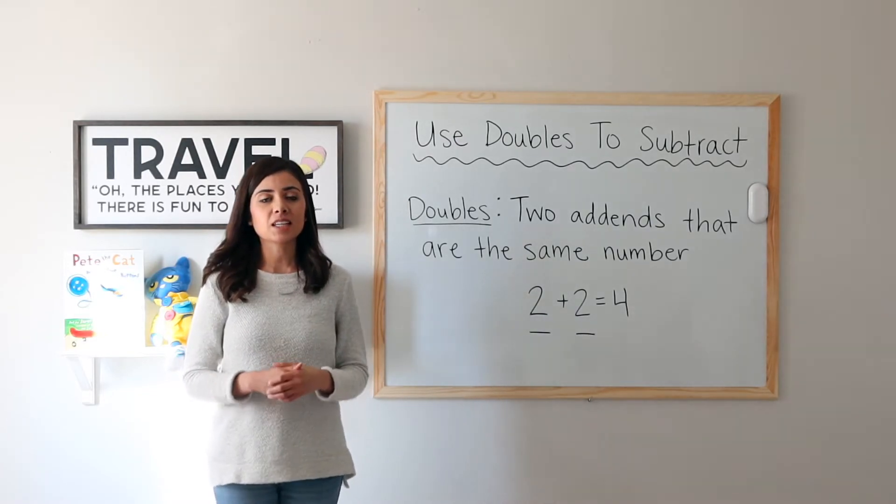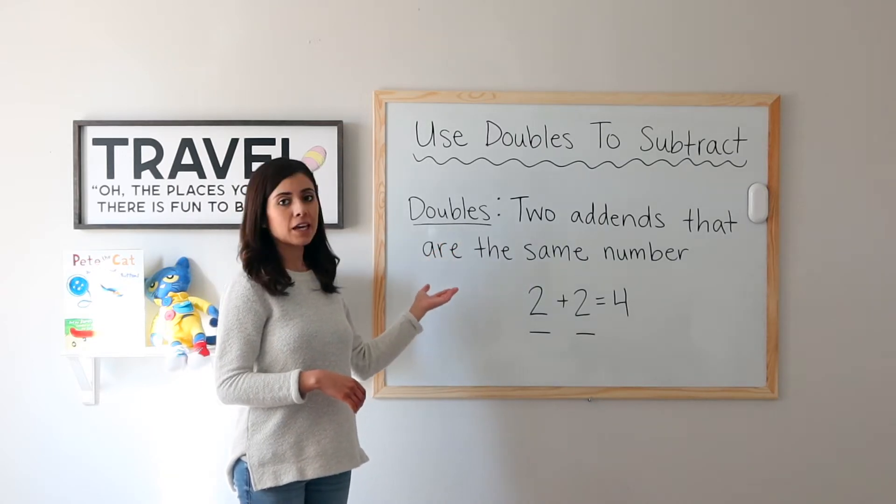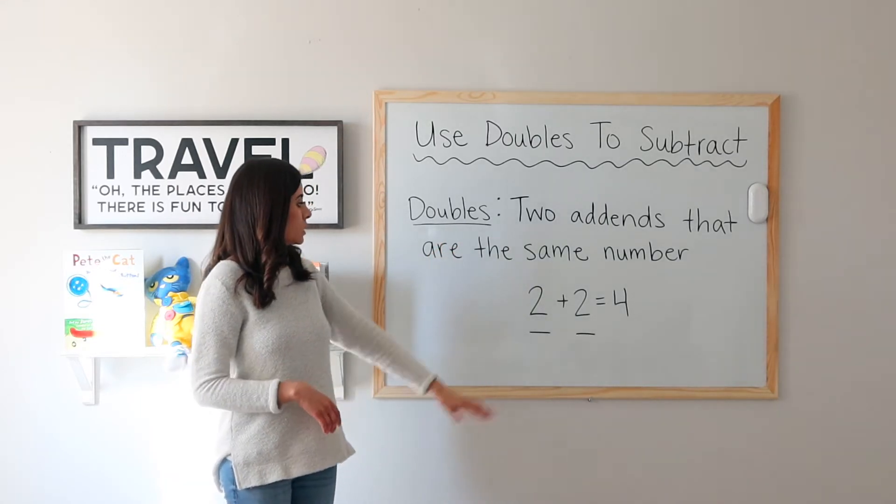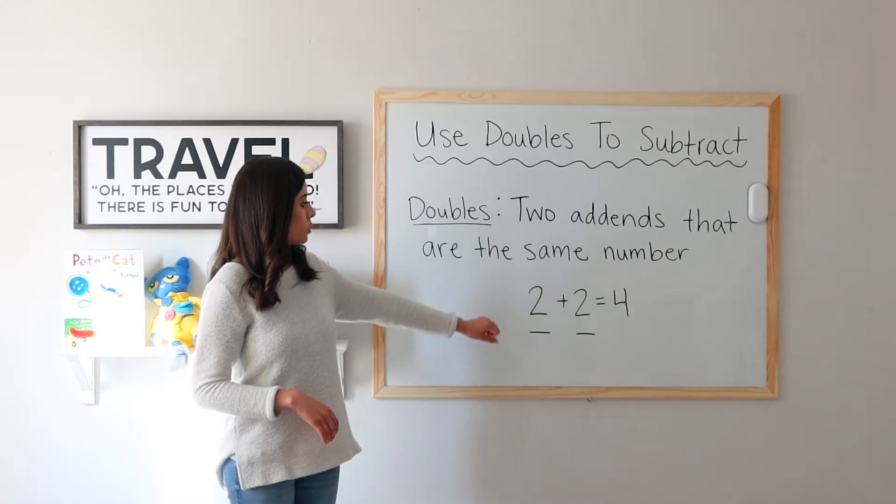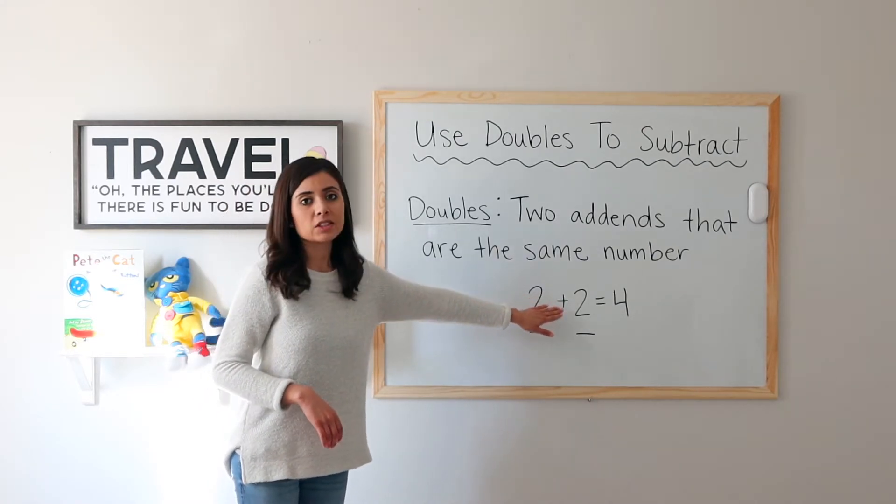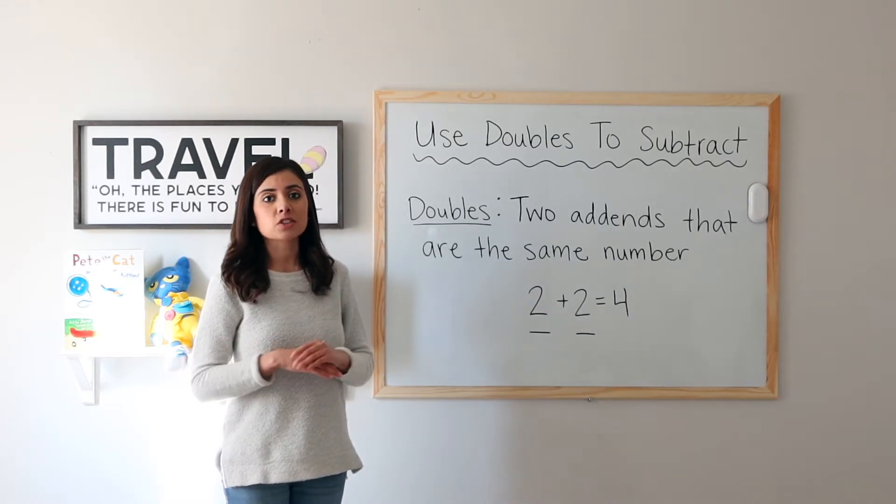Now before we get into the lesson, let's remember doubles. It's two addends that are the same number. So here I have 2 plus 2 equals 4. My two addends are 2 and 2. They are the numbers being added. They are the same number, so they are doubles.